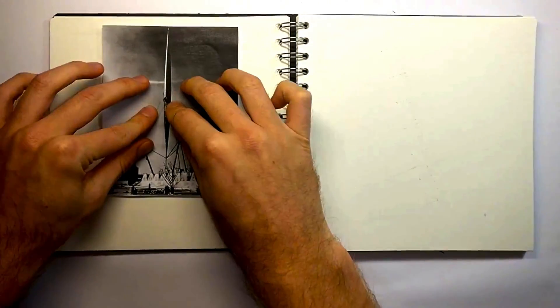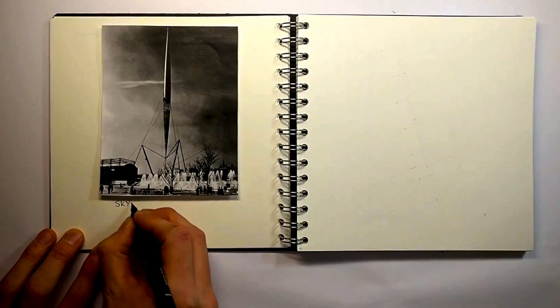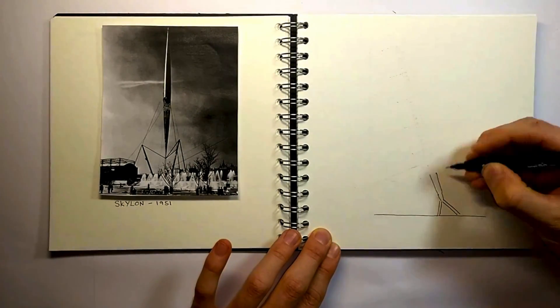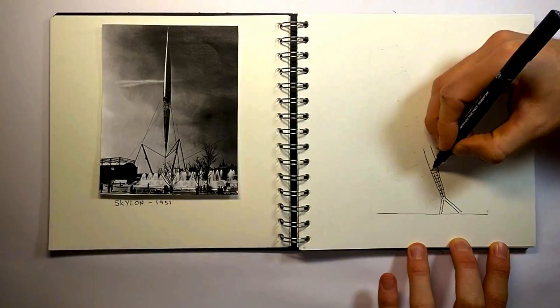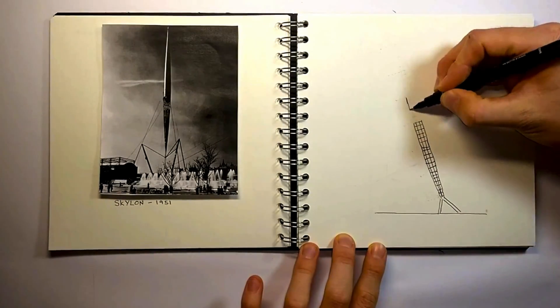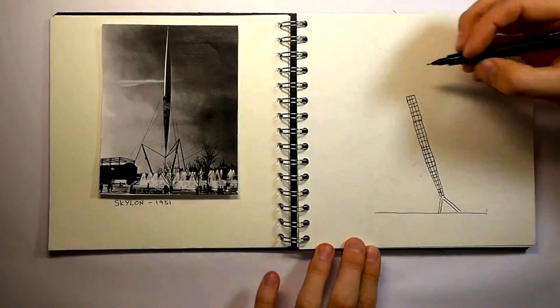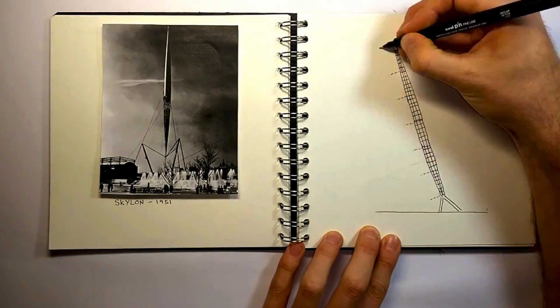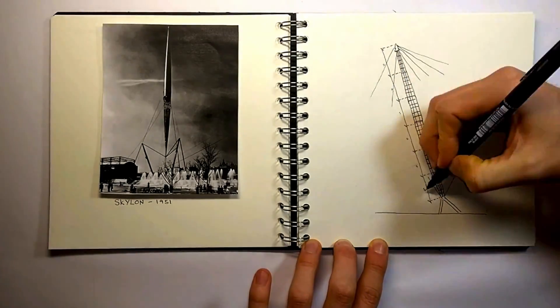The 12 masts resemble the Skylon, a sculpture built for the Festival of Britain in 1951. In the design of the structure, steps were taken to increase speed and sustainability in the construction process. An example of this is in splitting each of the masts into six individual segments. Each segment was designed so they could be fabricated in one go and be transported via road without notifying the council.